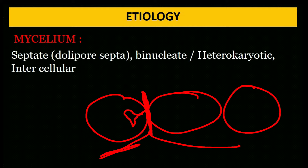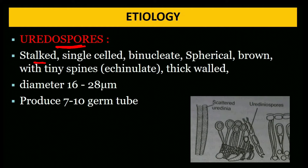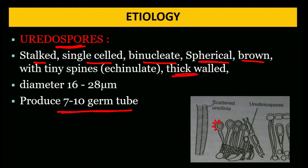Uredospore is stalked, single-celled, binucleate, spherical, brown in color, with small spine-like structures and thick wall. It produces 7–10 germ tubes — compared to stem rust pathogen which produces 4 germ tubes.